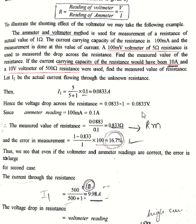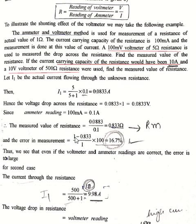The ammeter reading is 100 mA, equal to 0.1 amperes. So the measured value of resistance = voltmeter reading / ammeter reading = 0.0833 / 0.1 = 0.833 ohms. The error in measurement = (actual − measured) / actual = (1 − 0.833) / 1, giving approximately 16.7% error. This large error occurs because we used a low-resistance voltmeter, meaning the shunting effect is significant.